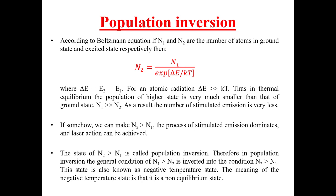But if somehow we can make n2 greater than n1, the process of stimulated emission dominates over spontaneous emission and laser action can be achieved. Since by this equation n2 greater than n1 represents a negative temperature, this state is also known as the negative temperature state. The state where n2 is greater than n1 is called population inversion, where the general condition n1 > n2 is inverted to n2 > n1.